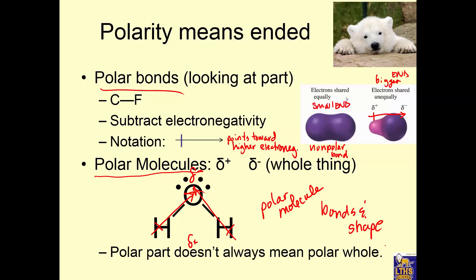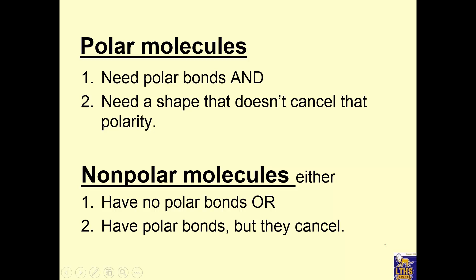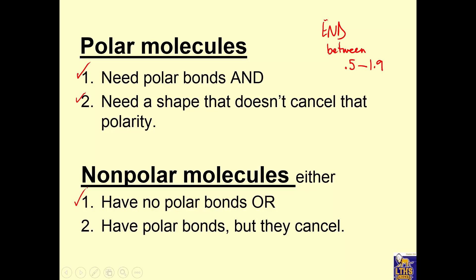That doesn't always mean you're going to have a polar molecule if you have polar bonds. If you want to see if you have a polar molecule, there has to be polar bonds — that's check one. The electronegativity difference has to be between 0.5 and 1.9. And you need a polar shape that doesn't cancel out those polar bonds. How would you get a non-polar molecule? Either you have no polar bonds, or there are polar bonds that cancel out.